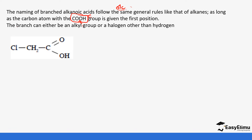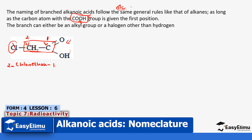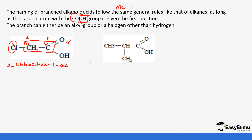So let's look at a few examples of naming alkanoic acids. When you look at this structure, you can see we have a branch at this carbon. The parent chain is made up of two carbons, so that means it is ethane. We have the OIC part at carbon number one. When you start numbering, you start with one, two. So we have a chloro at carbon number two. We call it 2-chloroethane-1-oic acid.